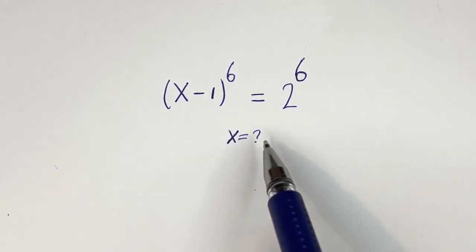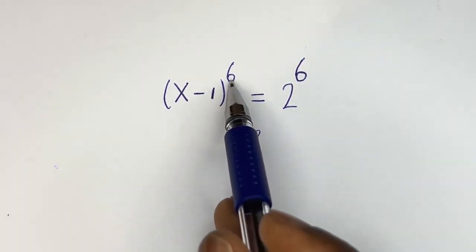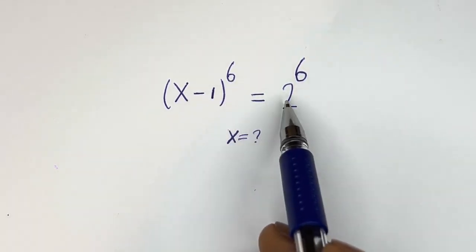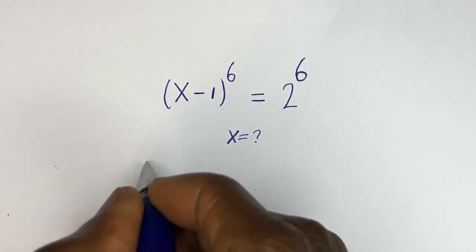Hello. How to solve for x in this equation: x minus 1 to the power of 6 is equal to 2 to the power of 6.